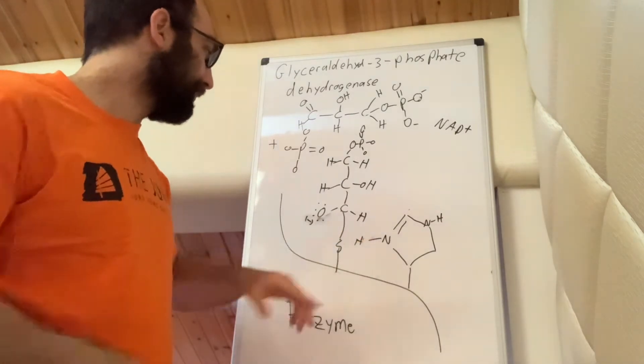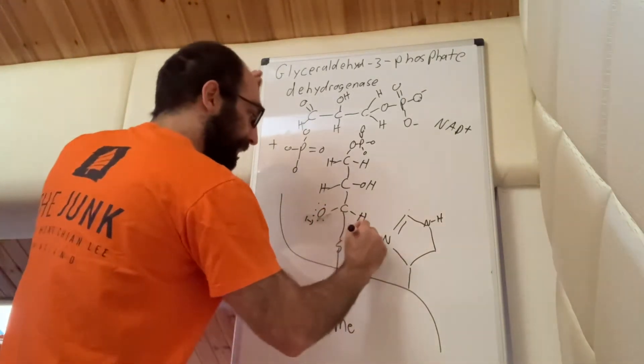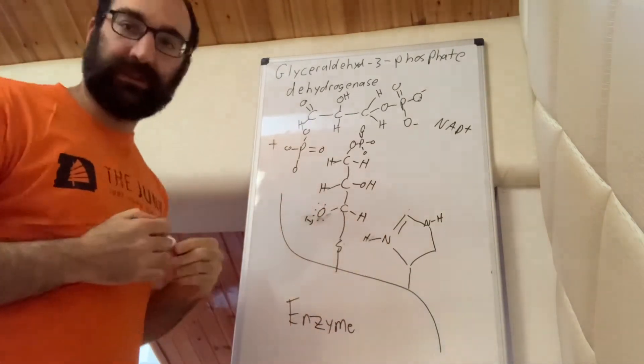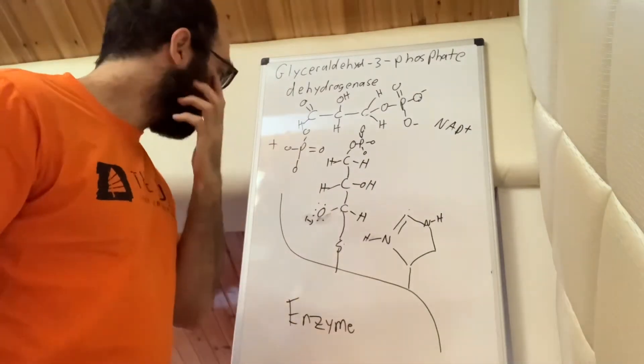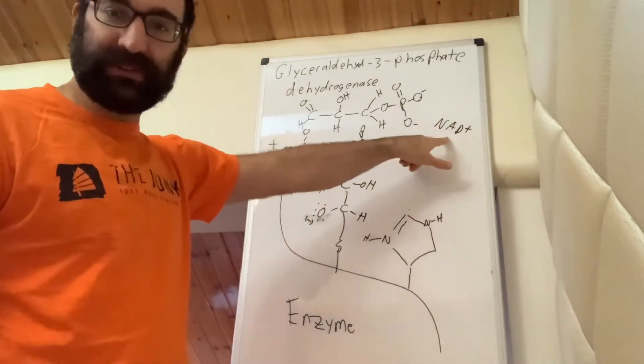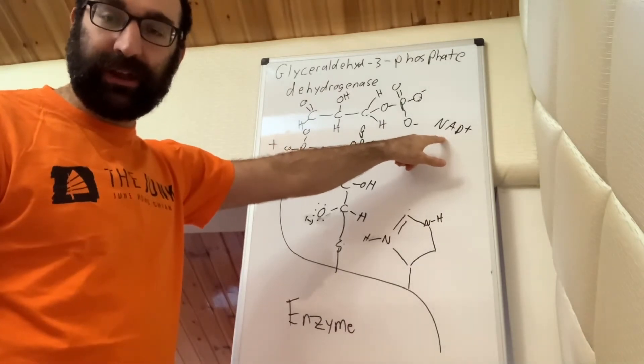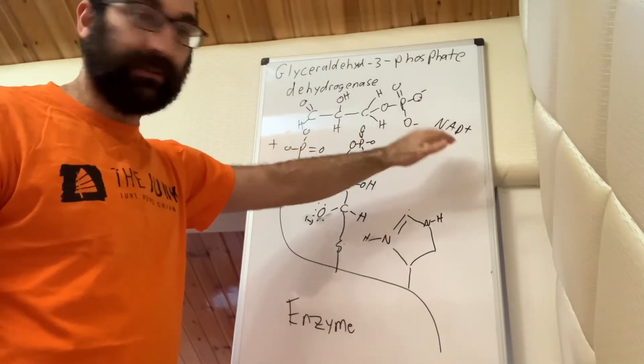So this is our intermediate structure. Now we've got nitrogen and it's got this proton stuck on here. So now, now what can happen? Now what would be our next logical step? Well, I've got this NAD positive.